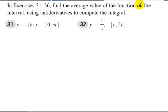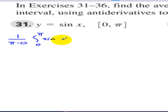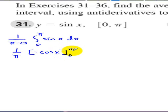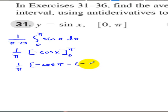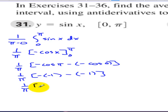In exercises 31 to 36, find the average value using antiderivatives to compute the integral. For the average value of sin(x) on [0, pi]: 1 over (pi minus 0) times the integral from 0 to pi of sin(x) dx. The antiderivative of sine is negative cosine, evaluated from 0 to pi. We get 1/pi times (negative cosine(pi) minus negative cosine(0)), which is 1/pi times (1 plus 1) — wait, 1/pi times 2, giving 2/pi.